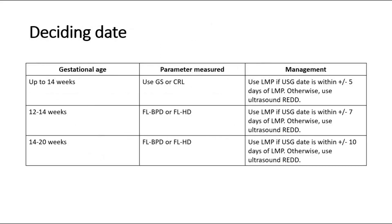For guidelines on deciding date: up to 14 weeks gestational age, use gestational sac or crown-rump length. Use LMP if ultrasound date is within plus or minus 5 days of LMP; otherwise use ultrasound EDD. For gestational age 12 to 14 weeks, use FL/BPD or FL/HC. Use LMP if scan date is within plus or minus 7 days of LMP; otherwise use ultrasound EDD.